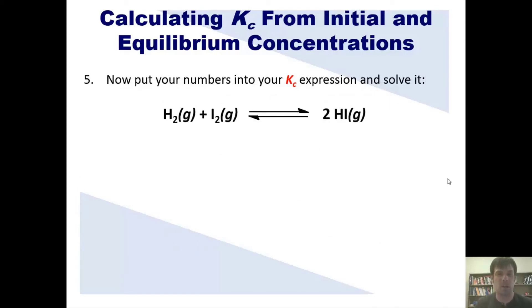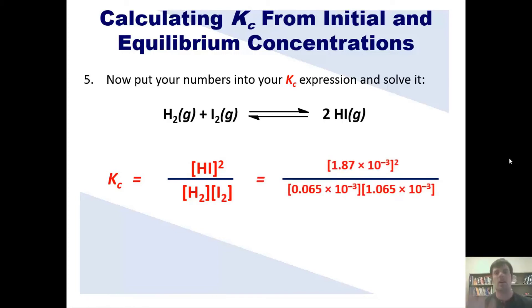Now that we have all these numbers in our brains, we'll go to step five. In step five, we now put our numbers into the Kc expression and solve for it. Kc, then, is going to be equal to the equilibrium concentration of HI squared, divided by each of the equilibrium concentrations of the reactants multiplied together. We have numbers now for each of those, which we got from our ICE table. Those numbers are these. We throw that into our calculator and get our final answer, which comes to 51.